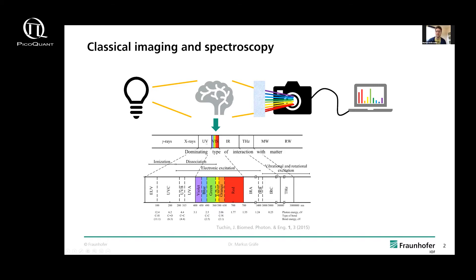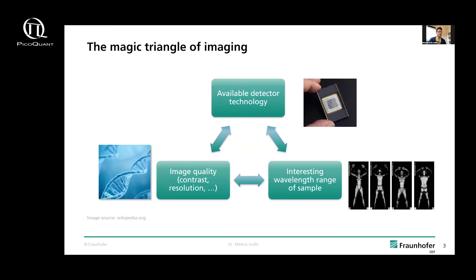There's actually a lot of interesting things to observe in those ranges. For example, in life science, if you want to do chemical-selective imaging, you actually need to go to the infrared and terahertz range to see the vibrations of molecules. And this is a limit that we try to overcome, which I sketch with this magic triangle of imaging.